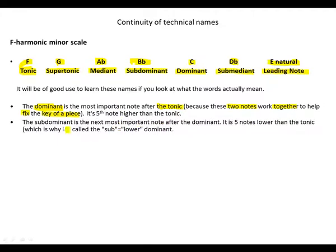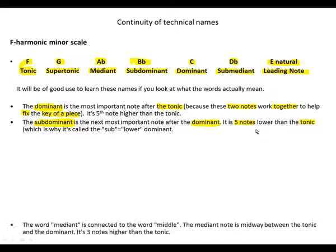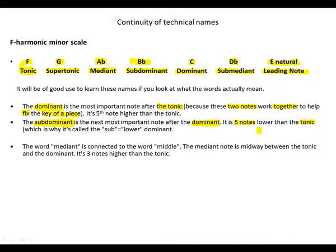The subdominant is five notes lower than the tonic, which is why it's called the sub, meaning lower, dominant. The word mediant is connected to the word middle.